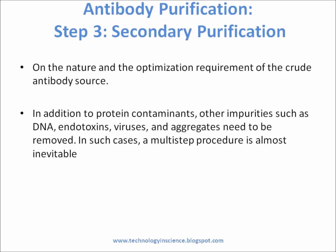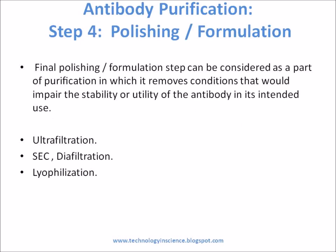All the same techniques used for initial capture can be used for secondary purification. Indeed, many techniques such as HIC and hydroxyapatite chromatography are more often used as polishing steps than as initial capture steps. Step 4: Polishing and Formulation. The final polishing or formulation step removes conditions that would impair the stability or utility of the antibody in its intended use. Final formulation may be as simple as sterilization by membrane filtration through a sterile filter with pores of 0.2 micrometers or less. Another relatively simple step is adjusting the antibody concentration by dilution with buffer or by concentration on ultrafiltration. The buffer composition may also need to be changed to achieve optimal stability, for which SEC or diafiltration is widely used.